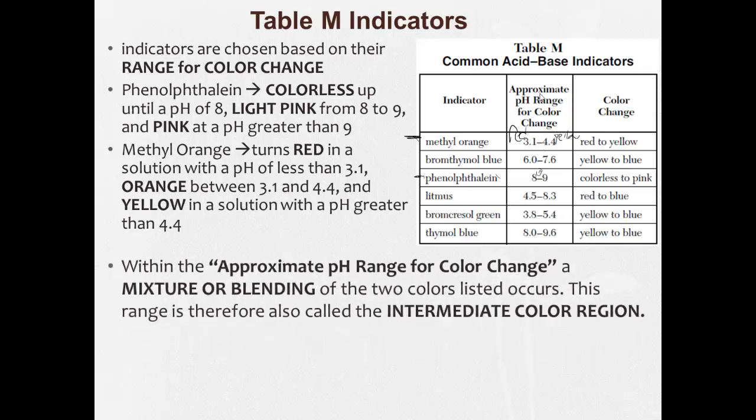So within that approximate pH range for color change, whatever's in here, you're going to get a mixture or blending of the two listed colors. For example, bromothymol blue at a pH of 6.4, it will get a blending.